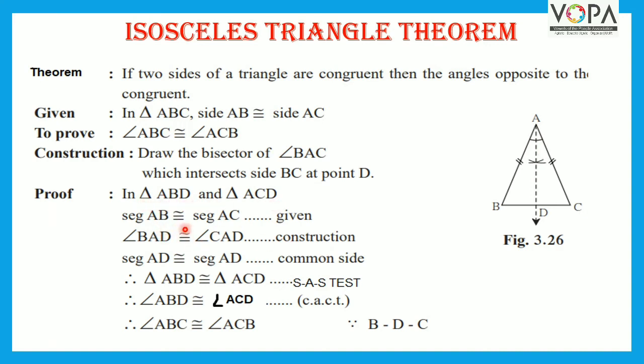segment AB congruent to segment AC, which is given to you. Angle BAD congruent to angle ACD, which is a common side.